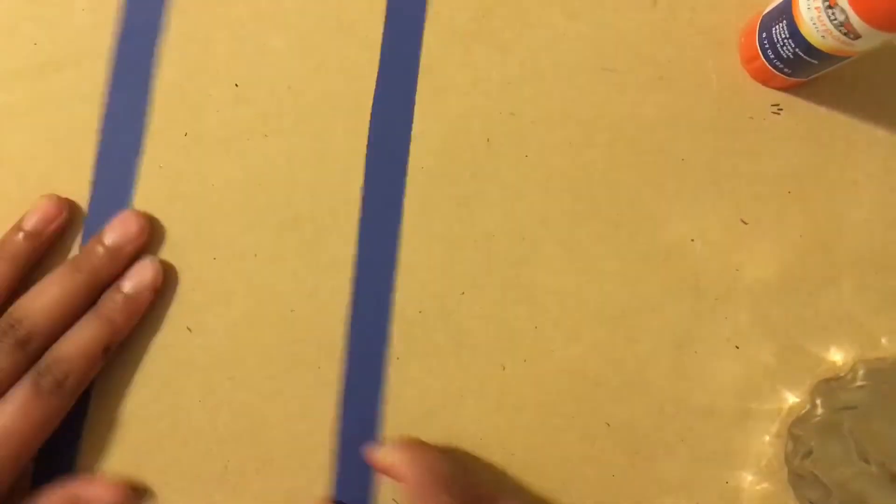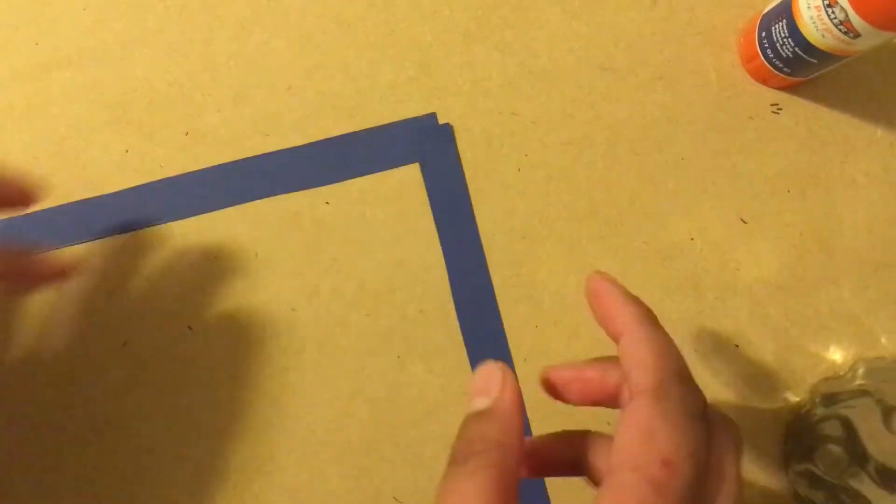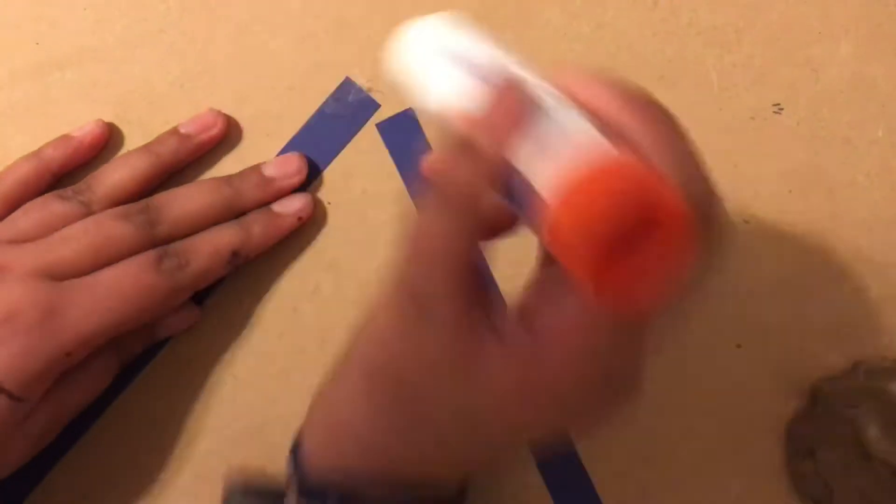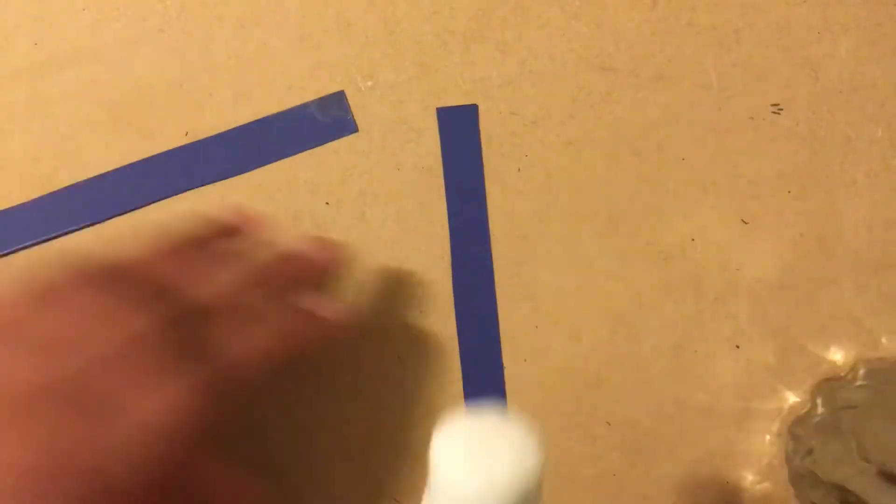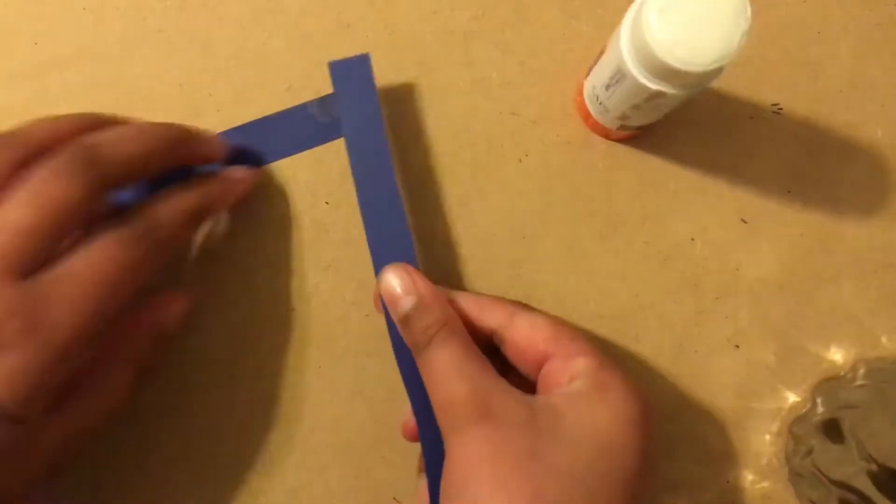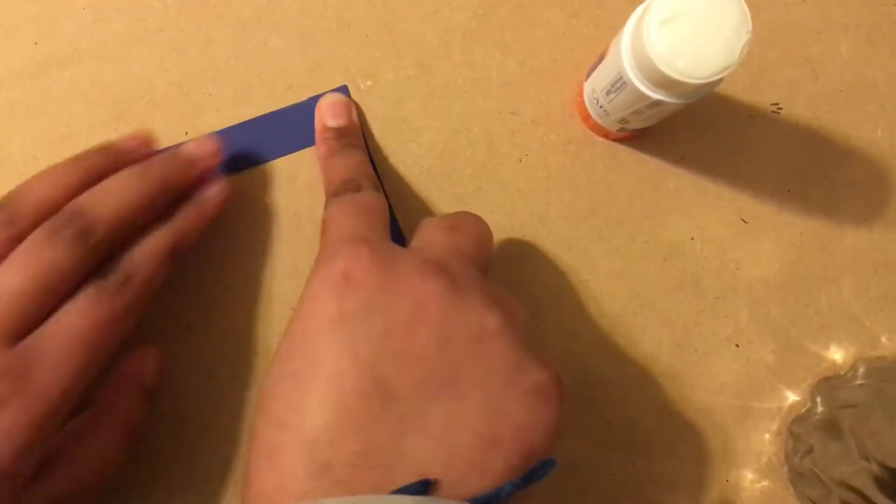We're going to be using a glue stick for this, or you can use liquid glue or hot glue. I use a glue stick because it's easier. We're going to put the first two strips—blue or grey, it doesn't matter—perpendicular to each other. Please make sure that you put glue on both strips because this is a very important part of our bookmark.